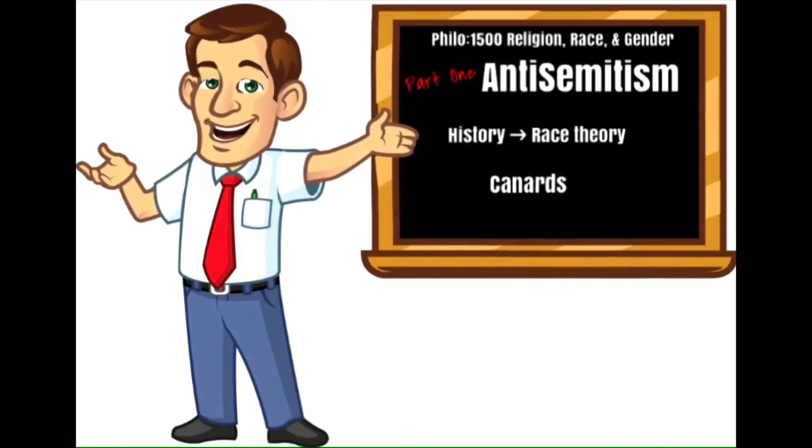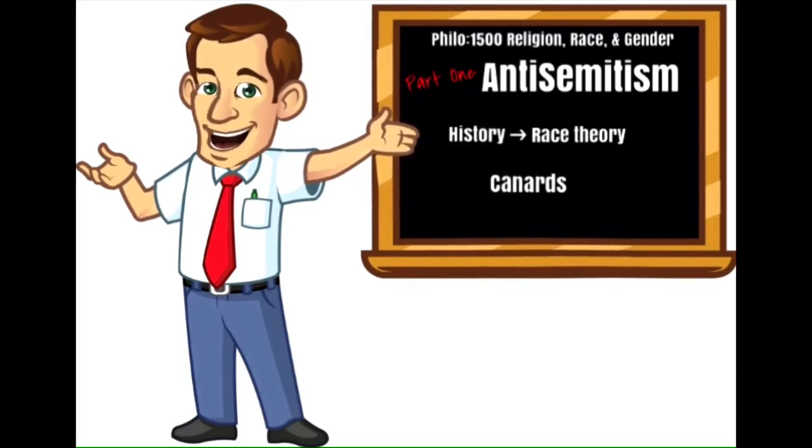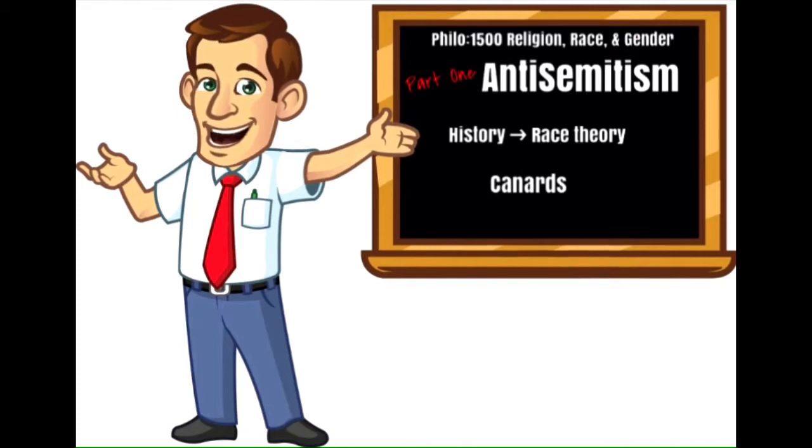On Saturday, that was St. Valentine's Day, they burned the Jews on a wooden platform in their cemetery. There were about 2,000 of them. Those who wanted to be baptized were spared. Many small children were taken out of fire and baptized against the will of their fathers and mothers. And everything that was owed to the Jews was canceled, and the Jews surrendered all the pledges. The council took the cash the Jews possessed and divided among the working men proportionally. The money was indeed the thing that killed the Jews. In some cities, Jews themselves set fire to their house and cremated themselves.